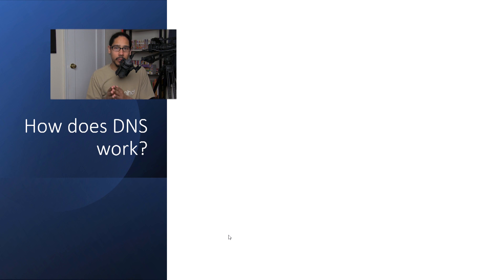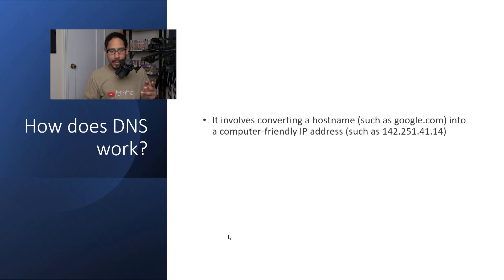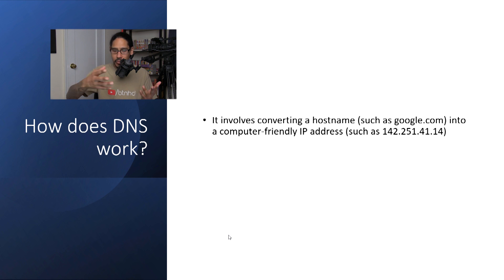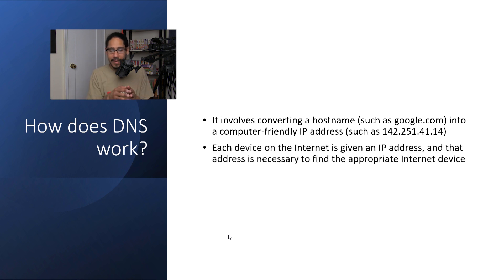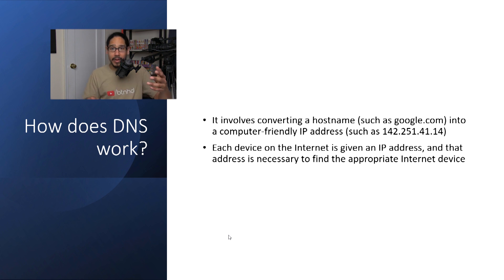How does DNS work? It works by converting a hostname such as Google.com into a computer-friendly IP address, such as 142.251.41.14 — that's actually Google's IP address and it always changes. Each device on the internet is given an IP address, and that address is necessary to find the appropriate device on the internet.